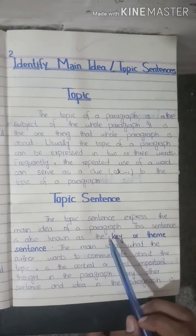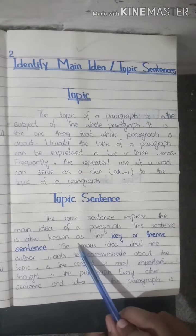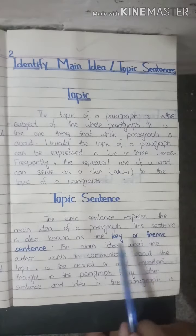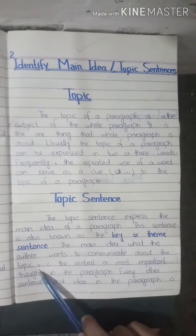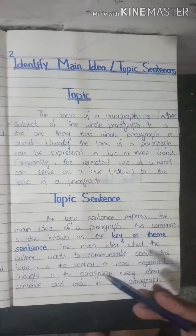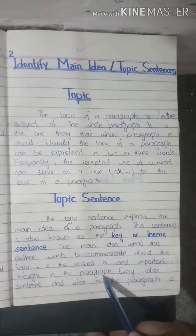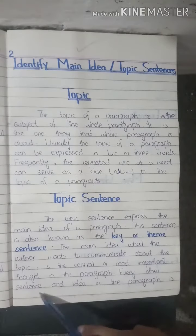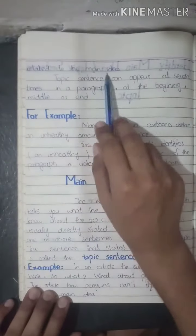This sentence is also known as the key or theme sentence. The main idea is what the author wants to communicate about the topic — it is the central and most important thought in the paragraph. Every other sentence and idea in the paragraph is related to the main idea.